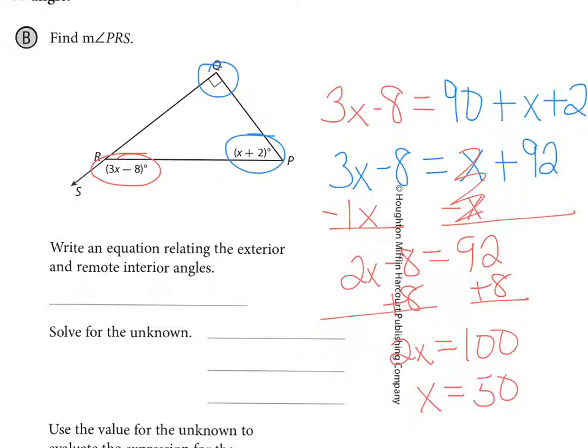And now I can find out the angles. So if I say 3 times 50 minus 8, it's 150 minus 8 would be 142. And this one, 50 plus 2 would be 52. 52 and 90 is 142. So yes, we checked our work, and we did that correctly.